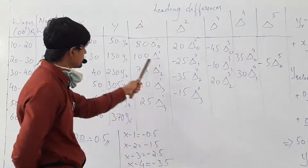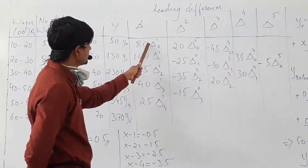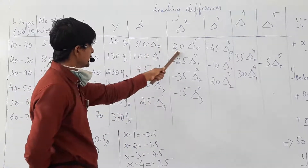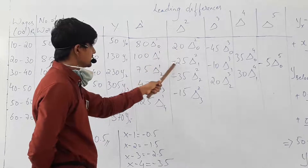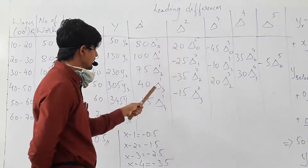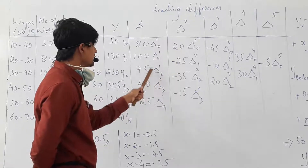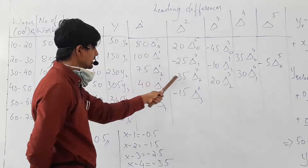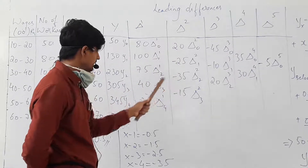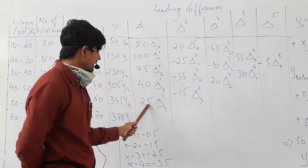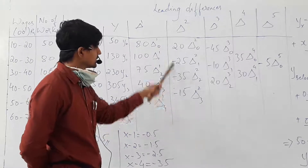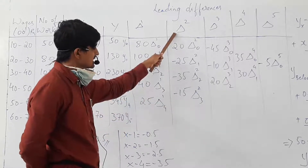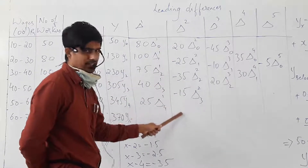Second leading difference: 100 minus 80 = 20. 75 minus 100 = minus 25. 40 minus 75 = minus 35. 25 minus 40 = minus 15. So this is the second leading difference.